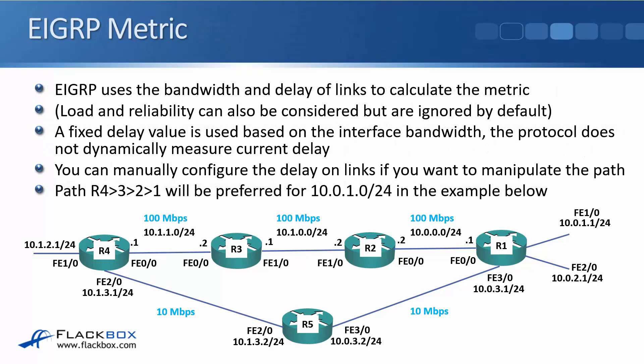EIGRP uses the bandwidth and delay of links to calculate the metric. Load and reliability can also be configured but are ignored by default. Bandwidth is used similarly to OSPF. The delay component is not measured dynamically — EIGRP uses a fixed delay based on the interface bandwidth, so effectively it's bandwidth-based again. You can manually configure the delay on links to manipulate the path. With both OSPF and EIGRP, because they use the best bandwidth links, they will normally choose the path you want, but you can override with manual configuration if needed.